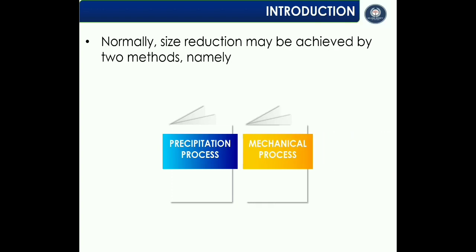The second method is the mechanical process. In this process, the substance is subjected to mechanical forces by using grinding equipment such as ball mill, roller mill, colloidal mill, etc. In general, dry grinding or milling is used in the production of tablets and capsules, while wet grinding is used in the preparation of suspensions, emulsions, and ointments. The method of milling is applied either in the production of raw materials or as part of the production cycle in the manufacturing of dosage forms.